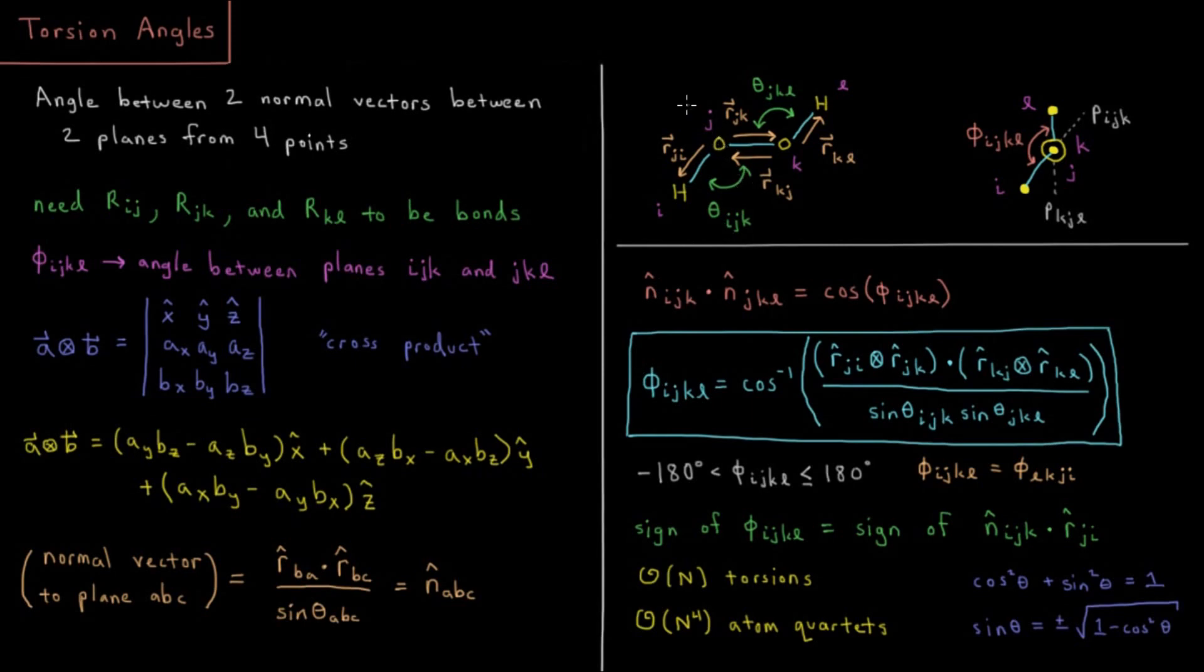So then we have a normal vector to our plane I, J, K. We have a normal vector to plane J, K, L. And the dot product of those two is going to be the cosine of our torsion or dihedral angle phi I, J, K, L.